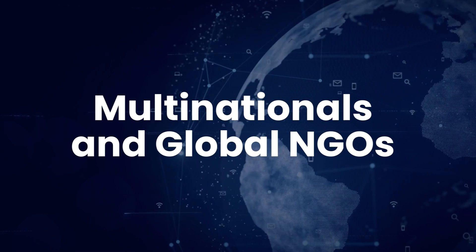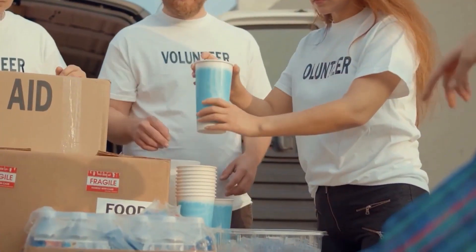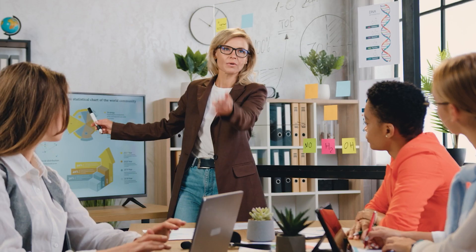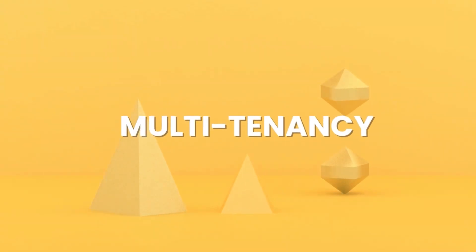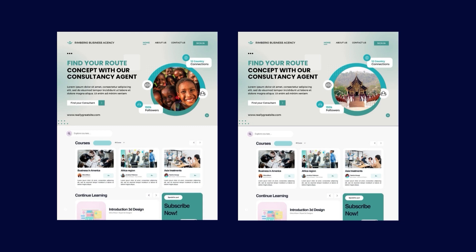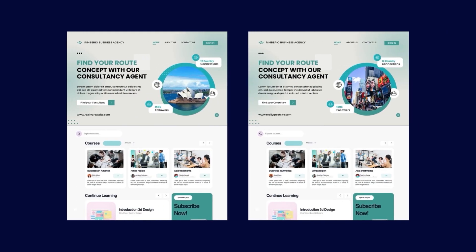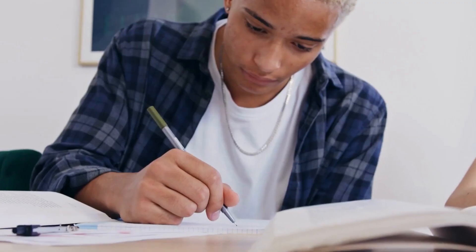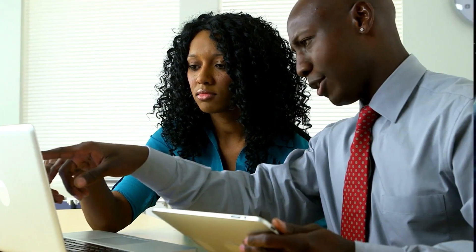For multinationals and global NGOs, if you're a multinational corporation or a global NGO, you have a presence in various parts of the world and wish to develop custom training tailored to the demographics of your local audiences. The EdgeNX multi-tenancy feature allows you to create multiple sites that look and feel entirely different, tailored to local needs, and managed centrally from one place. This provides unparalleled control and allows you to offer highly effective learning experiences worldwide.